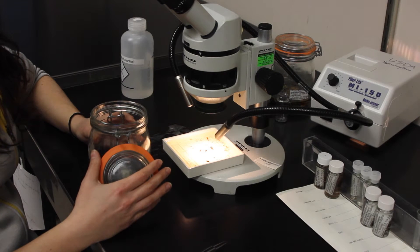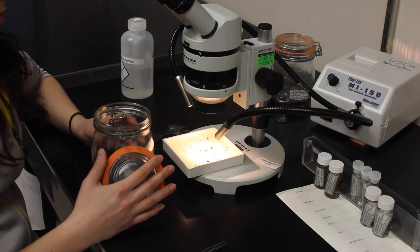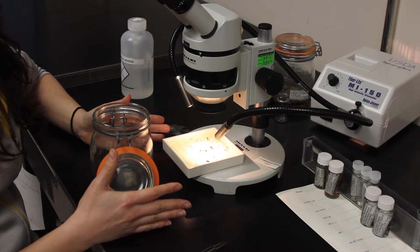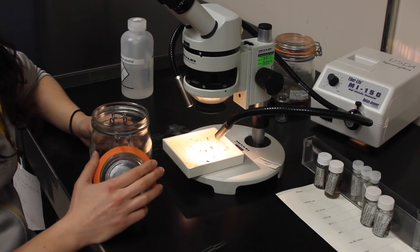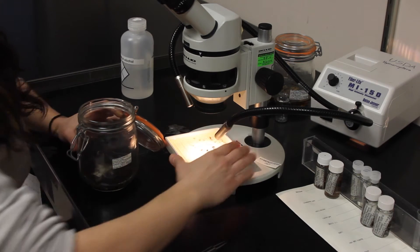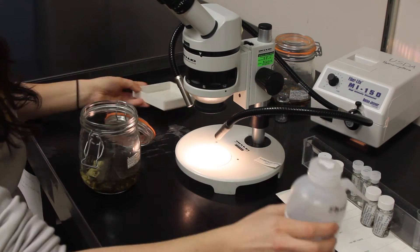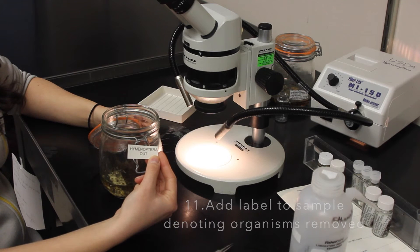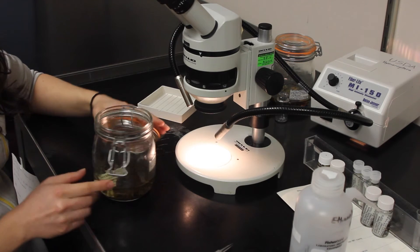I have finished sorting through my sample twice and verified that no target organisms were left. I have also gone through as many times as I have needed to get through the entire sample. Now I need to pour the rest of the sample, now only containing non-target organisms, back into the bale top jar that has the external label. I need to include an additional label that denotes that all target taxa have been removed. I have also inserted the internal label back into this jar.